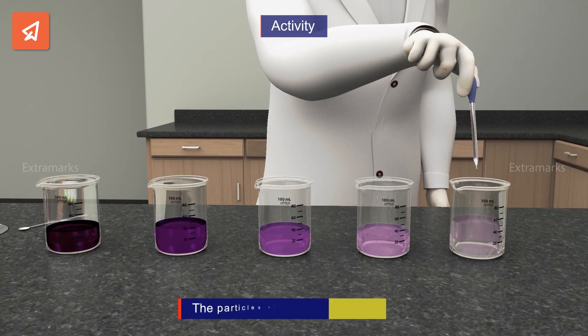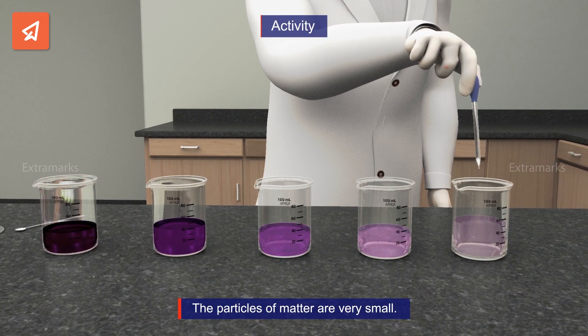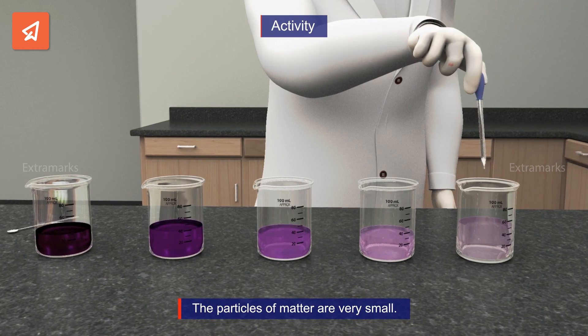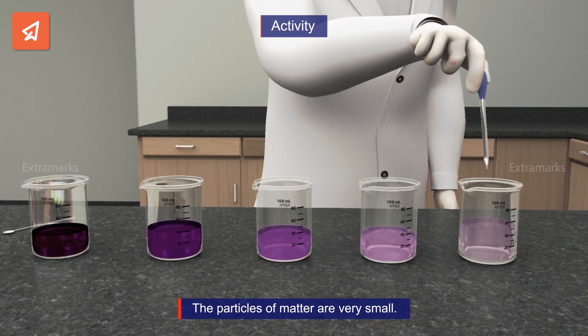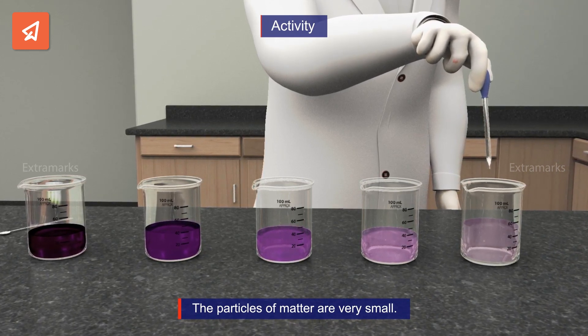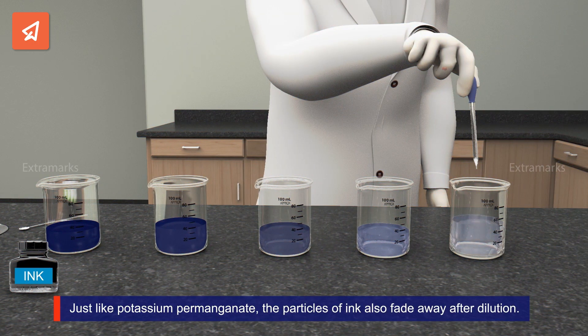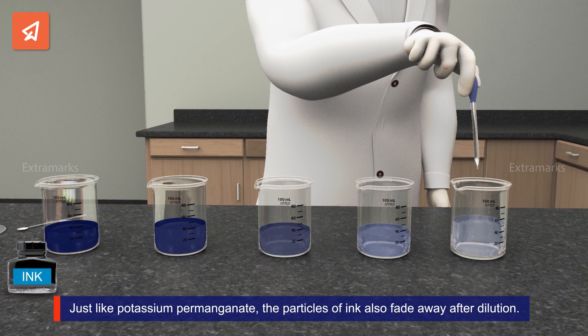We therefore conclude that there are millions of tiny particles of potassium permanganate that keep dividing themselves after each dilution and that particles of matter are very small indeed. Such a phenomenon can very well explain the fading of ink solution on repeated dilution.